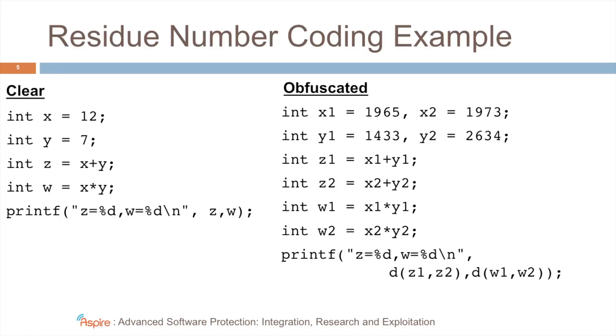So it's hard for the attacker to learn which big numbers correspond to 12 or 7 in this case. You see that because of the mathematical properties of residue number coding, the addition and multiplication can still occur as in the original program, albeit on two variables instead of one. And you also see that before exporting the values, they have to be decoded. You see that happening here.